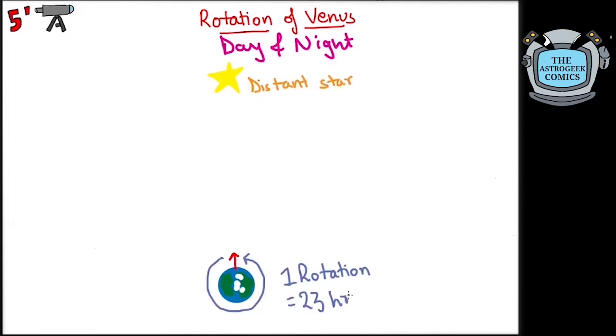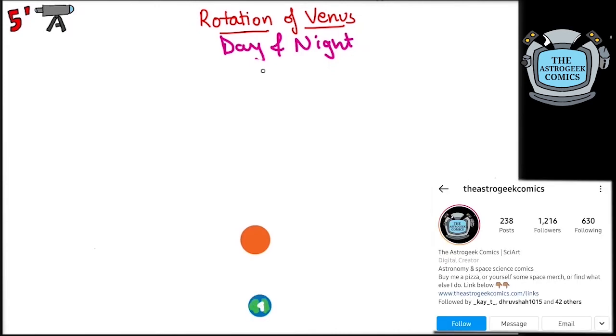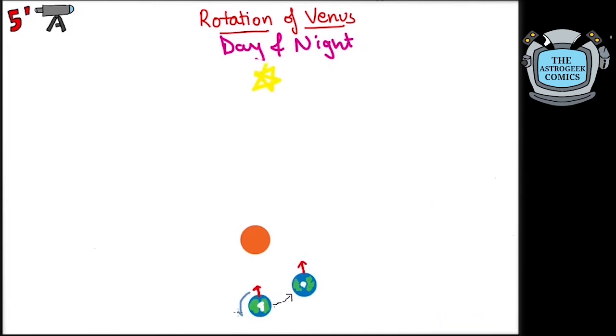For Earth, it is 23 hours 56 minutes. It is also called sidereal day. But during this time, our planet has moved a distance in its orbit and hence the Earth, which rotates in the same direction as it revolves, has to rotate a little bit more for the Sun to be back over the meridian of the reference location. This takes an extra 4 minutes and hence the solar day is 24 hours.